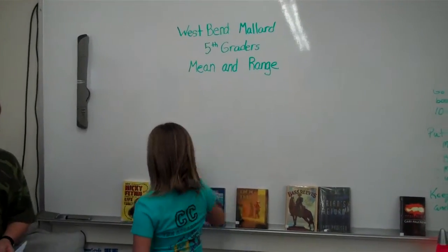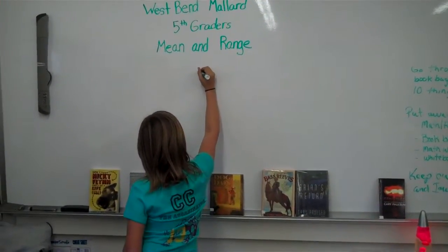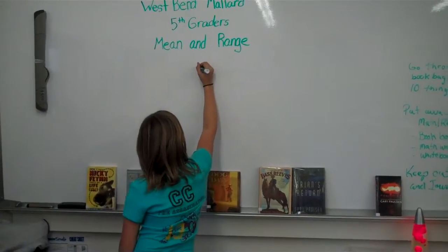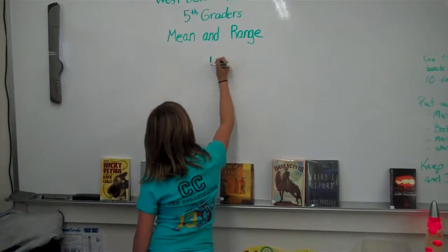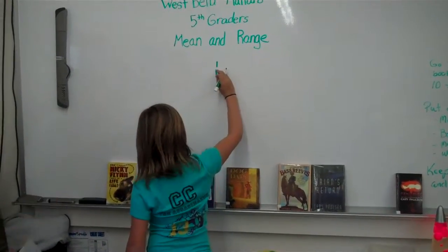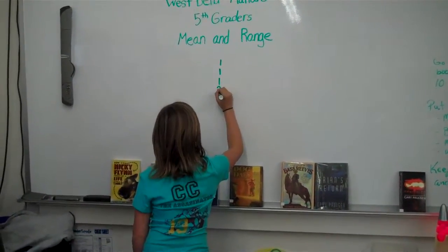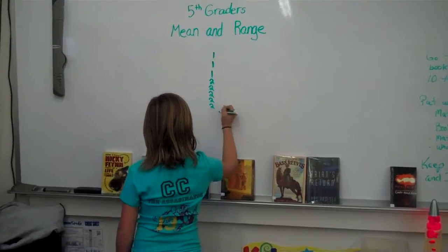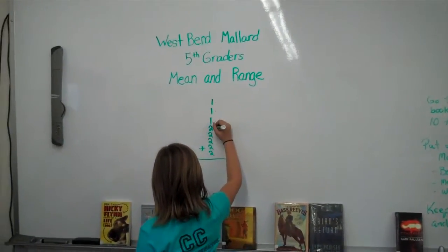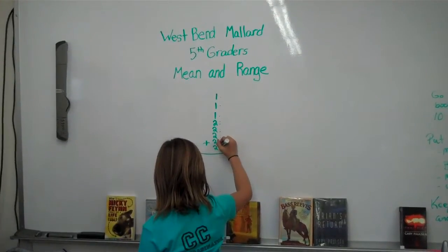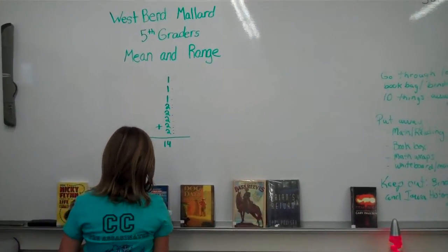Okay, now we are going to do one to find the average. There are eight basketball players. One made one shot. And five made two shots. Now you add them up. The answer is fourteen. Now you take fourteen divide by eight.